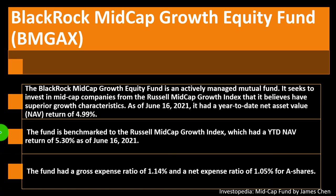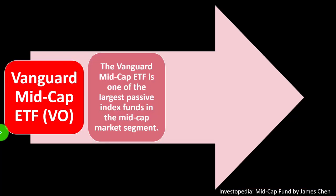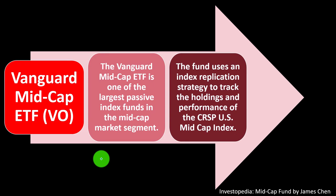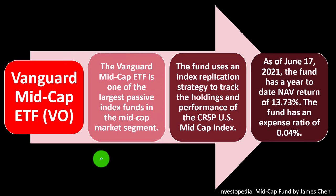The Vanguard Mid-Cap ETF, ticker VO, is one of the largest passive index funds in the mid-cap market segment. It's not actively managed — it takes the average of the pool and invests in that, which lowers the costs of managing the fund. The fund uses an index replication strategy to track the holdings and performance of the CRSP U.S. Mid-Cap Index. As of June 17, 2021, the fund had a year-to-date NAV return of 13.73%, and an expense ratio of only 0.04%.